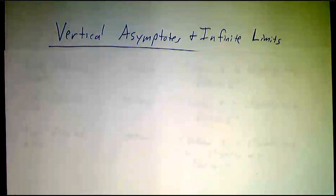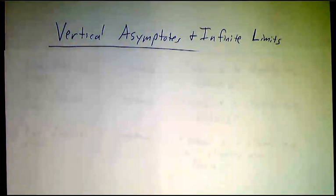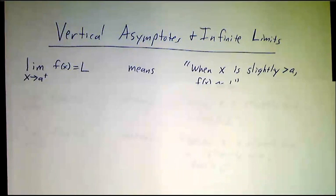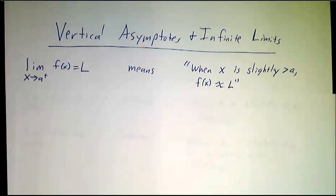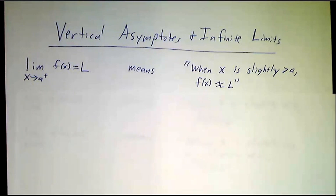Let's talk about vertical asymptotes and infinite limits. Before we do that, let's review what we mean by finite limits. If I write that the limit of a function — the limit as x approaches a from above of f is l — we're talking about what happens when x is slightly, slightly bigger than a. You plug in a number that's a plus a millionth,